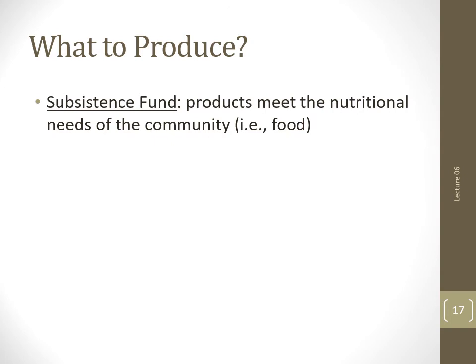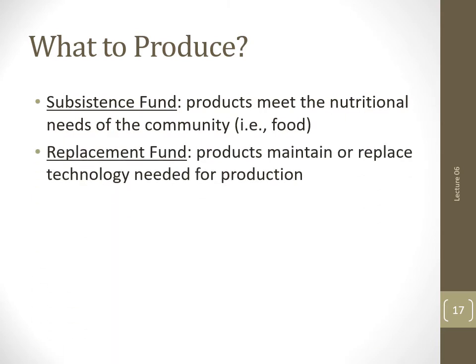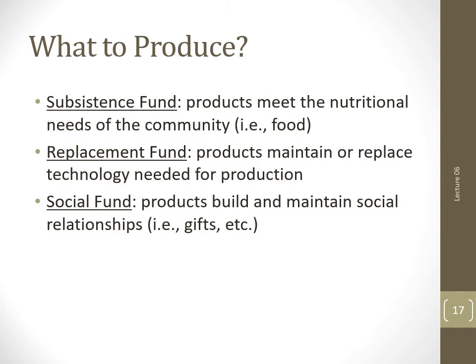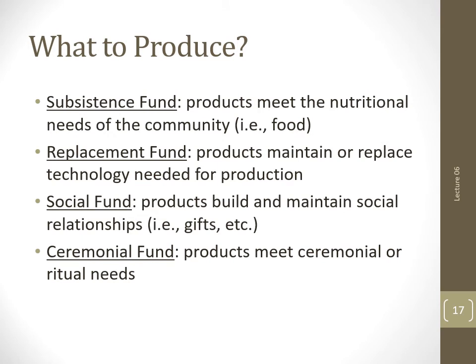According to Wolf, every economy must produce things that meet several different kinds of needs. The subsistence fund meets the nutritional needs of a community and is an essential component of any economy — a subsistence strategy of some sort is a cultural universal. Second, the replacement fund includes products that replace or maintain technology, the means of production, and it is also essential. Next, the social fund meets the needs of building and maintaining social relationships — gifts, for example — and again, all economies produce goods of this sort. The ceremonial fund consists of products used in ceremonies or rituals. While religious activities of this sort are universal, the degree to which economic resources beyond time and labor must be invested will vary greatly. In some cultures, everyday objects can be used in both ritual and secular contexts; in others, special ritual objects must be produced.